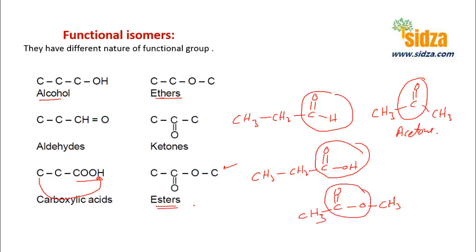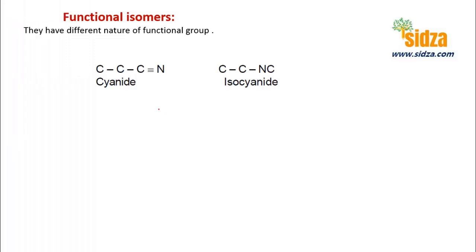These are functional isomers — same formula but different functional groups. Cyanides and isocyanides are also functional isomers. In cyanides, the alkyl chain bonds through the carbon, written as RCN. In isocyanides, it is the nitrogen that forms the bond with the alkyl group, written as RNC. So these are again functional isomers.